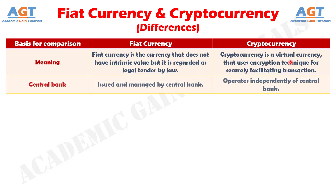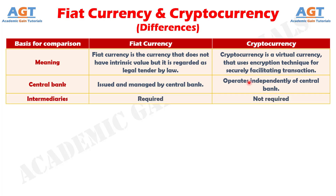Number 2: While the issue and control of fiat currency are regulated by the central bank of the country, cryptocurrency works independently of the central bank. Number 3: One of the main features of cryptocurrency is that the transactions between the parties are direct, as it removes intermediaries like banks, which is a must in case of fiat currency.